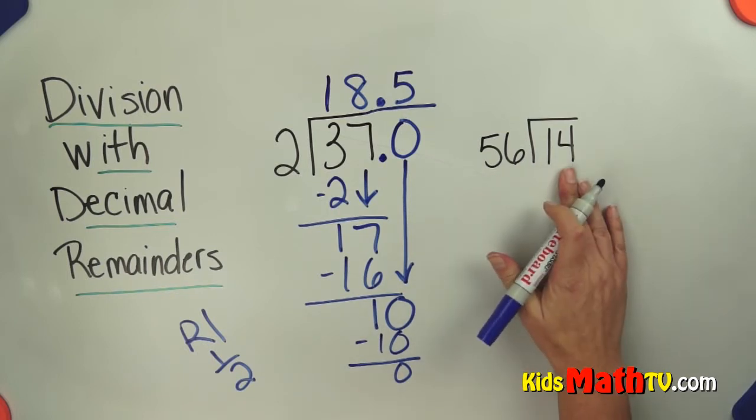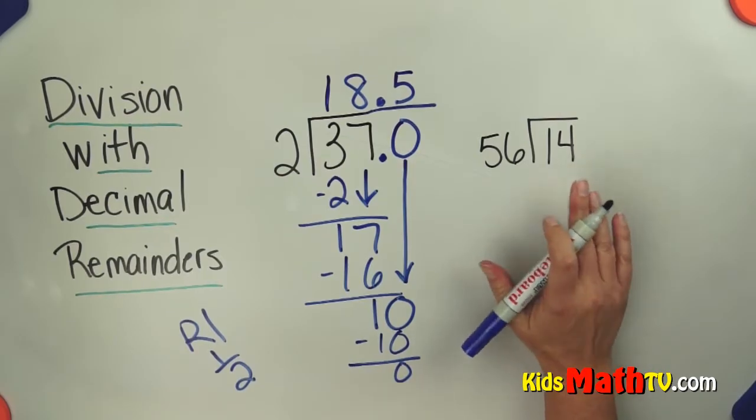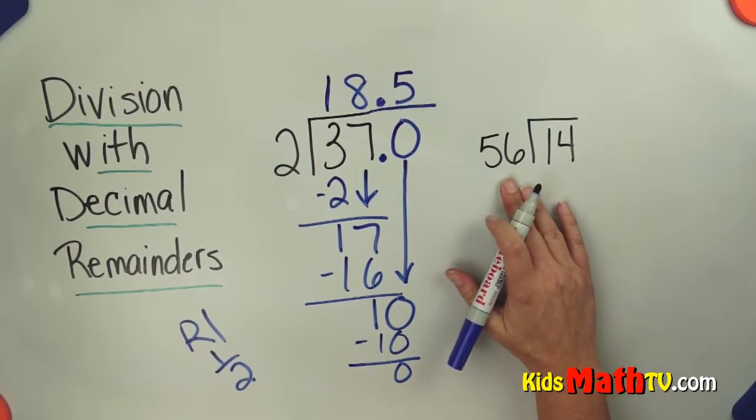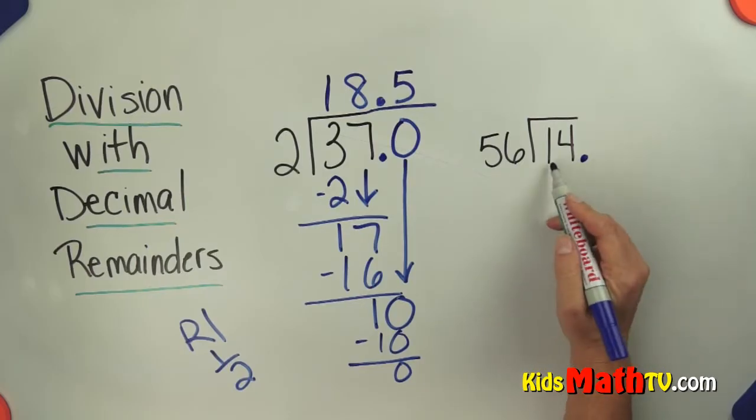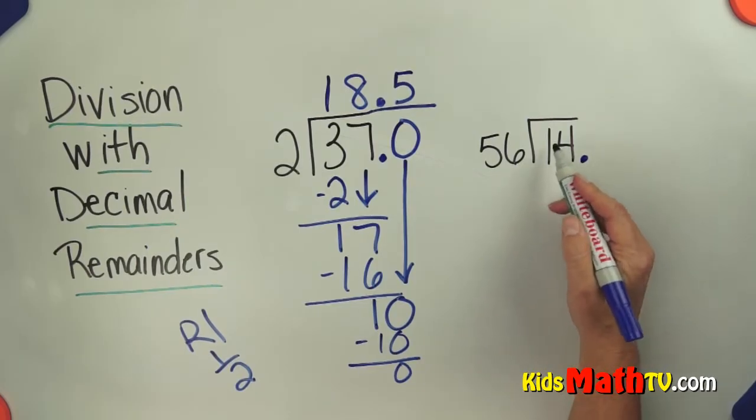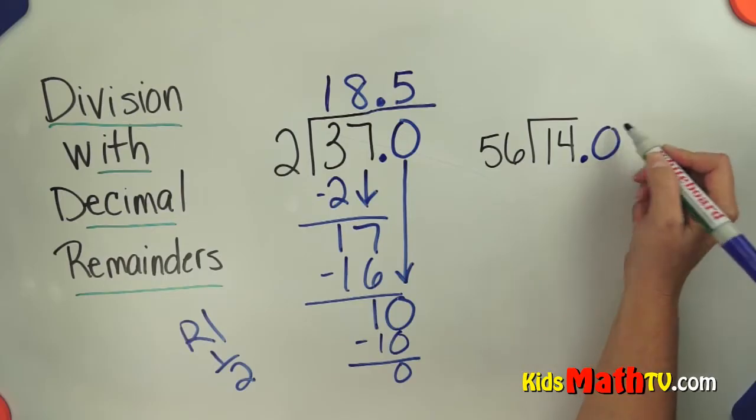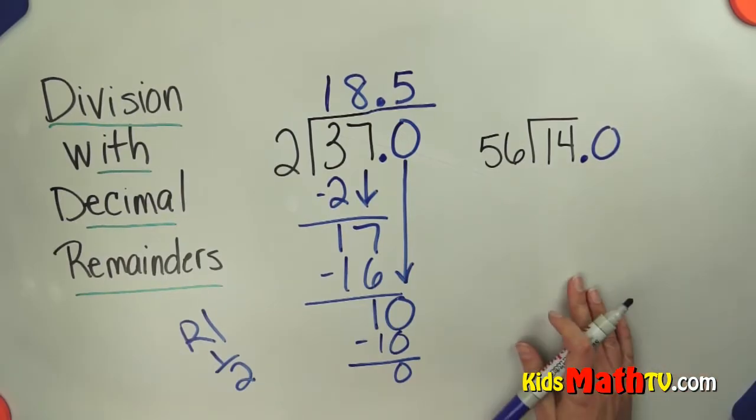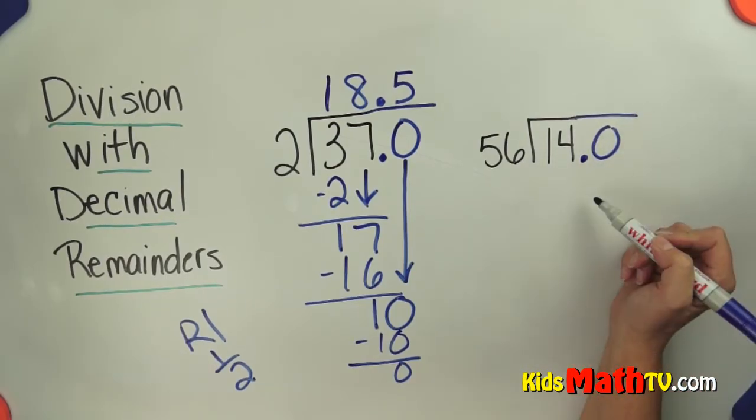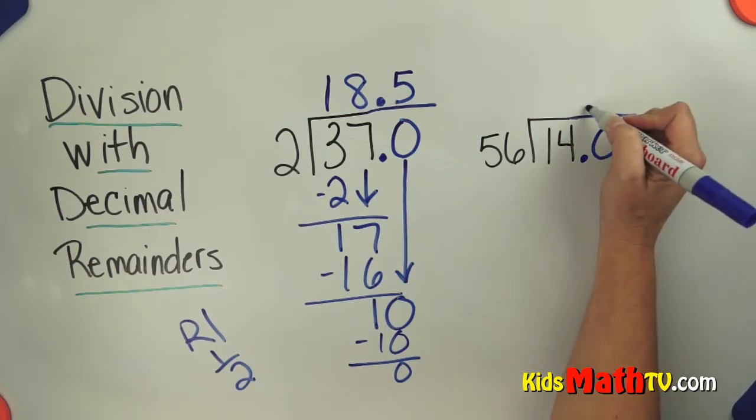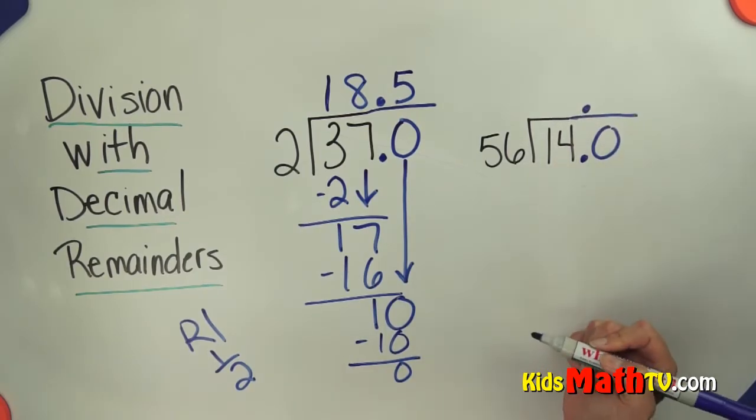Let's look at 56 into 14. So you would think that you can't really do this, but you can. 14 will divide by 56. We simply put a decimal, like $14, and we can add zeros. I can put as many zeros as I want. I'm going to start with 1 and see if I need any more. I bring my decimal straight up, and now I divide.